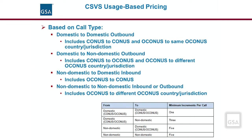The usage-based plan cost is based on the type of call — i.e., whether it is a domestic or non-domestic call — and the associated billing unit increments. For the usage-based plan, billing for domestic-to-domestic calls and calls within the same country or jurisdiction is different from domestic-to-non-domestic calls, non-domestic-to-domestic calls, and non-domestic-to-non-domestic calls. Each has their own billing structure and billing increments as shown in the usage-based billing increments table.